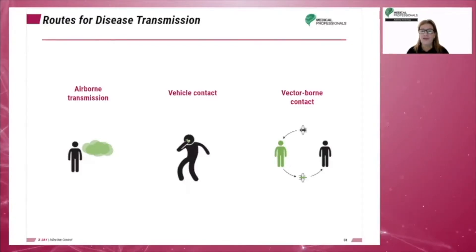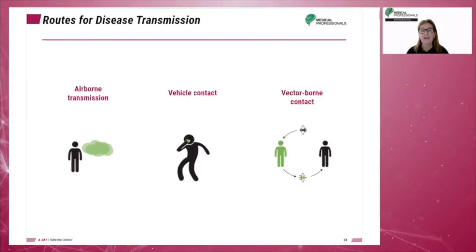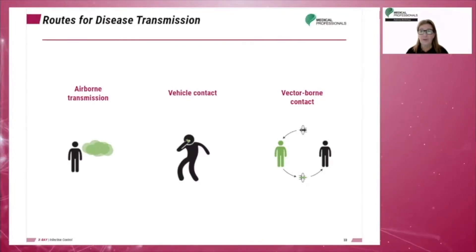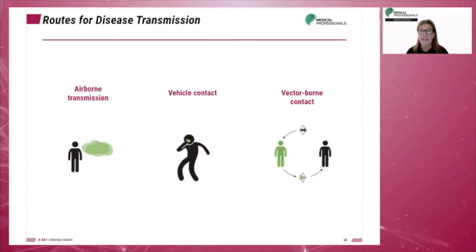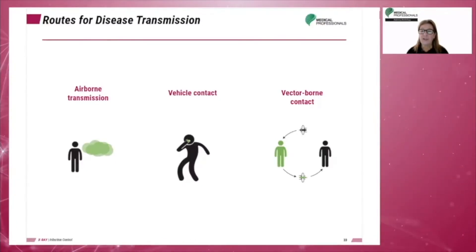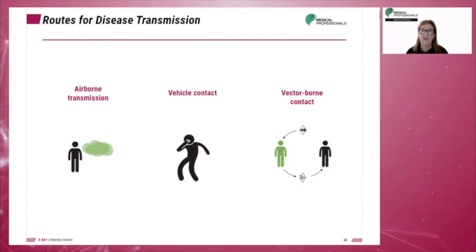Vector transmission occurs when the carrier is an organism, such as an insect or animal. For example, a mosquito, a flea, or a tick can carry the infection from an infected person to a non-infected individual.